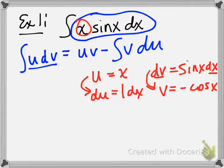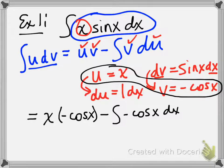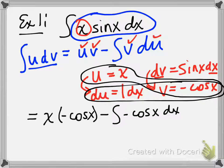Now that I have these four things, all I have to do is plug in: u, v, and du. So the integral of x sin(x) dx is going to be u times v — which is x times negative cosine x — minus the integral of v du, which is negative cosine x times 1 dx. So we did u·v minus ∫v du. Notice that the dv term has been left out now.